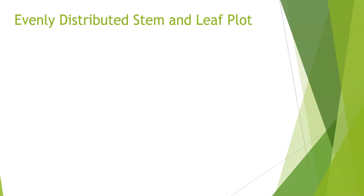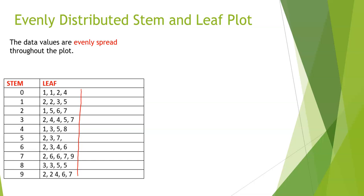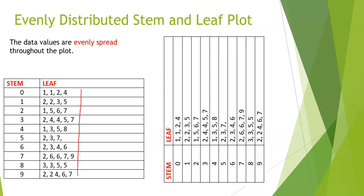The fourth type of stem and leaf plot you could describe is an evenly distributed stem and leaf plot. In this example, there is no real peak at all — if you draw the shape, it's almost like a vertical line. The data values are evenly spread throughout the plot. Rotating 90 degrees anti-clockwise, there are certainly no peaks; it looks like a horizontal line. Therefore, we say it's evenly distributed.